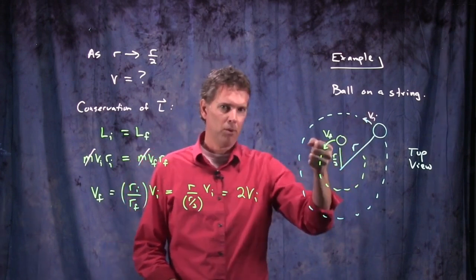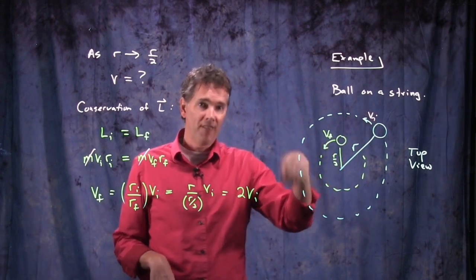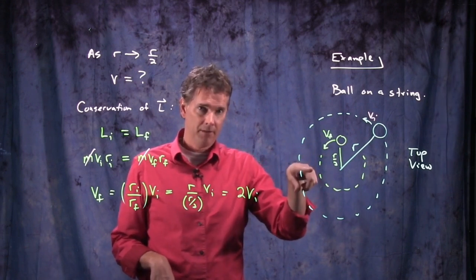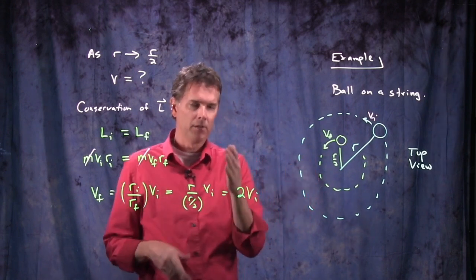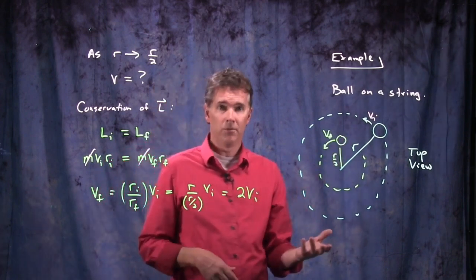As that object is pulled in by pulling on the string, it starts going faster and faster. So when you're at halfway in, it's going twice as fast. If you went to a third, it would be going three times as fast.